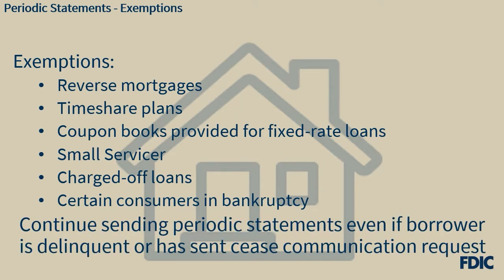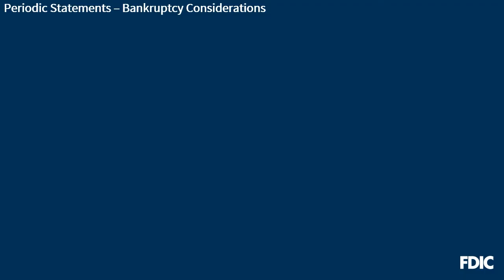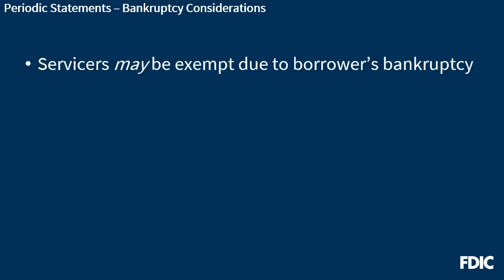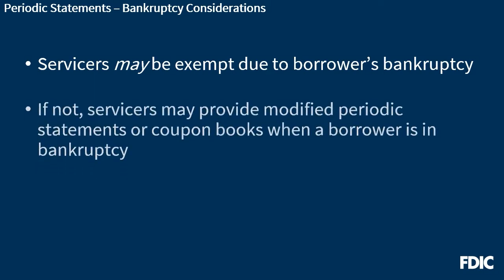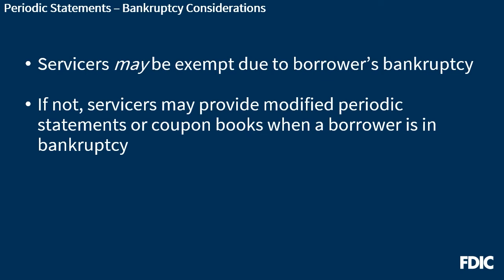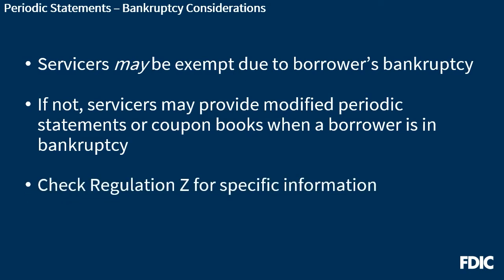Large servicers must continue to send periodic statements even when the borrower is delinquent or if the servicer is a debt collector under the FDCPA to whom the borrower has sent a written cease communication request. Servicers may be exempt from some of the periodic statement requirements while the borrower is a debtor in bankruptcy, or if the borrower discharges personal liability for the mortgage debt, or certain other conditions are met. However, large servicers may have to provide modified periodic statements or coupon books to these consumers. The rules and CFPB resources describe when to provide modified and unmodified periodic statements or coupon books.